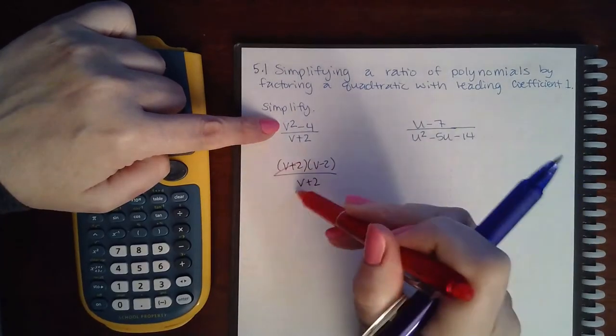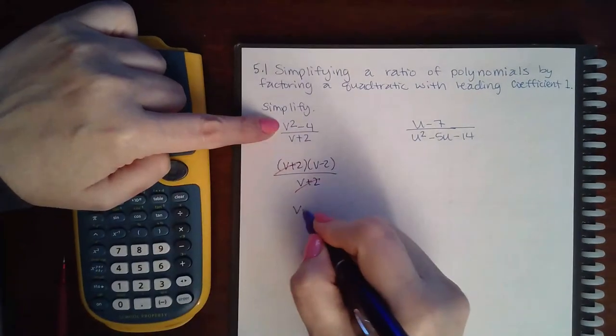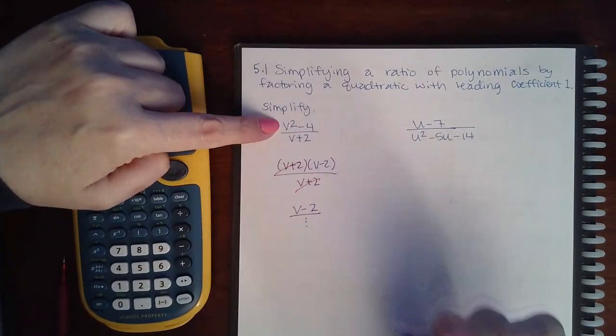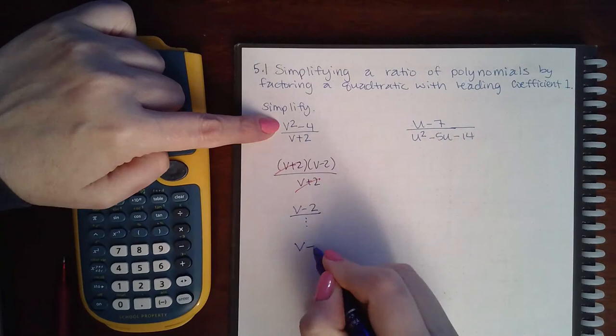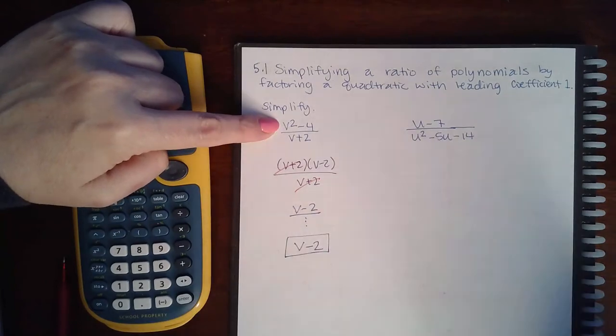So this factor reduces with that one, leaving me with v minus 2 over an invisible 1. And since it's over 1, it's a whole number, v minus 2.